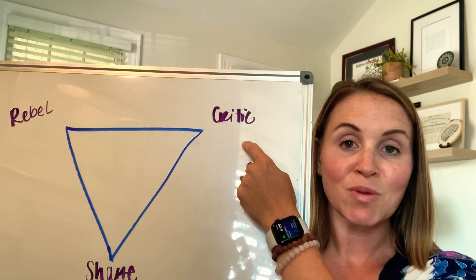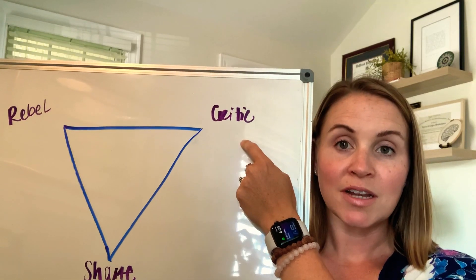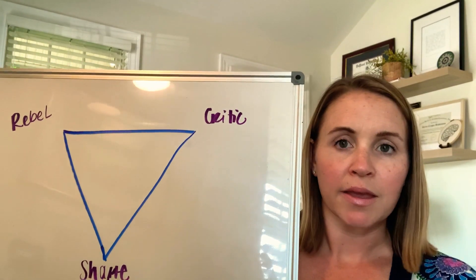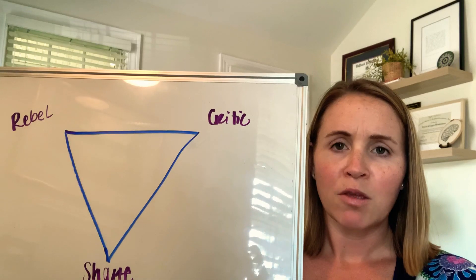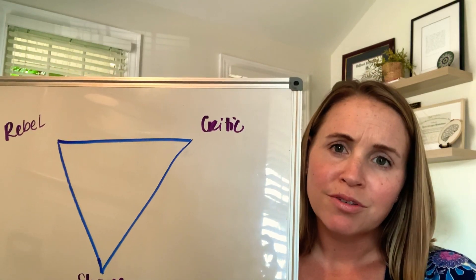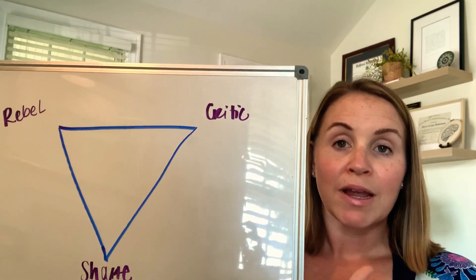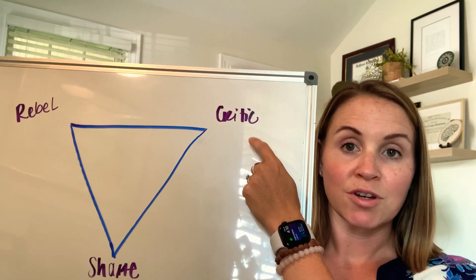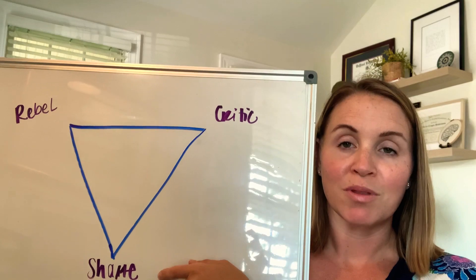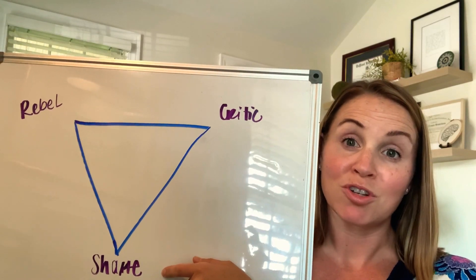So a lot of times we think the critic is who we are. A lot of times we're like, oh well, I'm just type A or I'm just conflict averse. I'm a peacekeeper. And we fail to recognize that these behaviors are based off of a belief system that's built around shame and trauma.